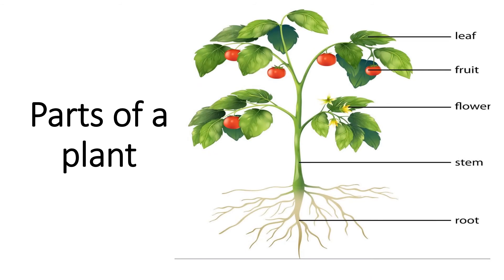Parts of a plant. Here, class, you could see the parts of the plant, already labeled. That is the example of leaf, fruit, flower, stem, and roots. You could see the picture.